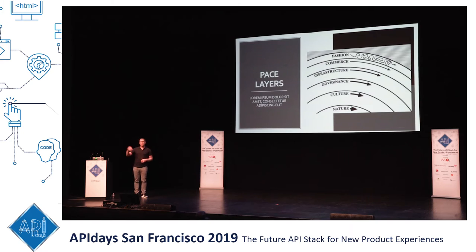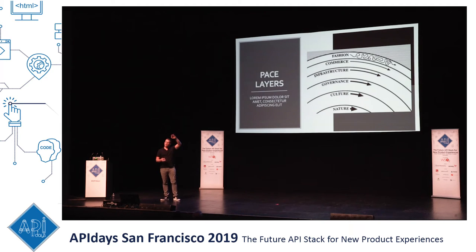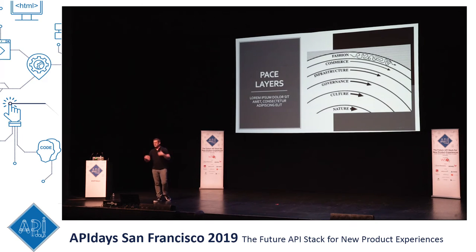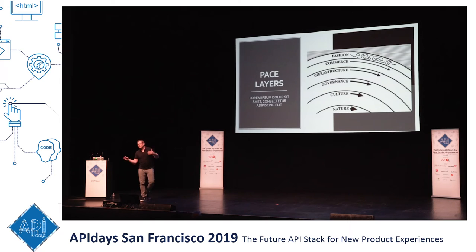Next we have infrastructure — our roads, plumbing systems, electrical systems. If you go to the East Coast or even overseas in Europe, you go into older buildings where you can see where they had to layer in new infrastructure over the existing walls. That stuff does change at a slightly faster pace than governance. Then we have commerce — the ability for business to provide new services, products, experiences in response to demand. That changes at a fairly fast clip, and then at the very top of the pace layer we have fashion. This is the speed at which new ideas occur, how fast your department store window swaps out new ideas — it changes very, very rapidly.